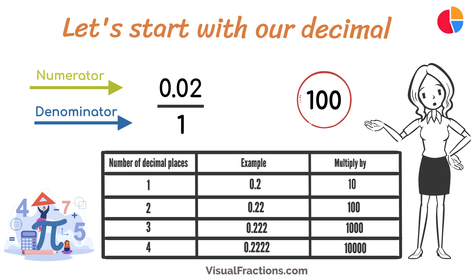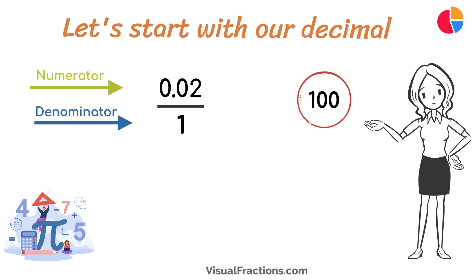This sets up the conversion process where we multiply both the numerator, the decimal, and the denominator, 1, by 100 because there are two decimal places. So, 0.02 times 100 gives us 2, and 1 times 100 gives us 100.